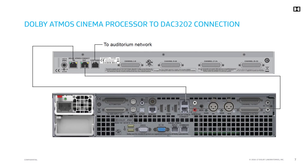The interconnections between the Dolby Atmos Cinema processor and DAC-3202 are shown on this slide for reference. In this example, the CP850 is shown, but the same method applies when establishing connections with the IMS-3000. The closed-loop connection represented here can be helpful as a system failsafe in the event of communication issues, but is not a requirement.